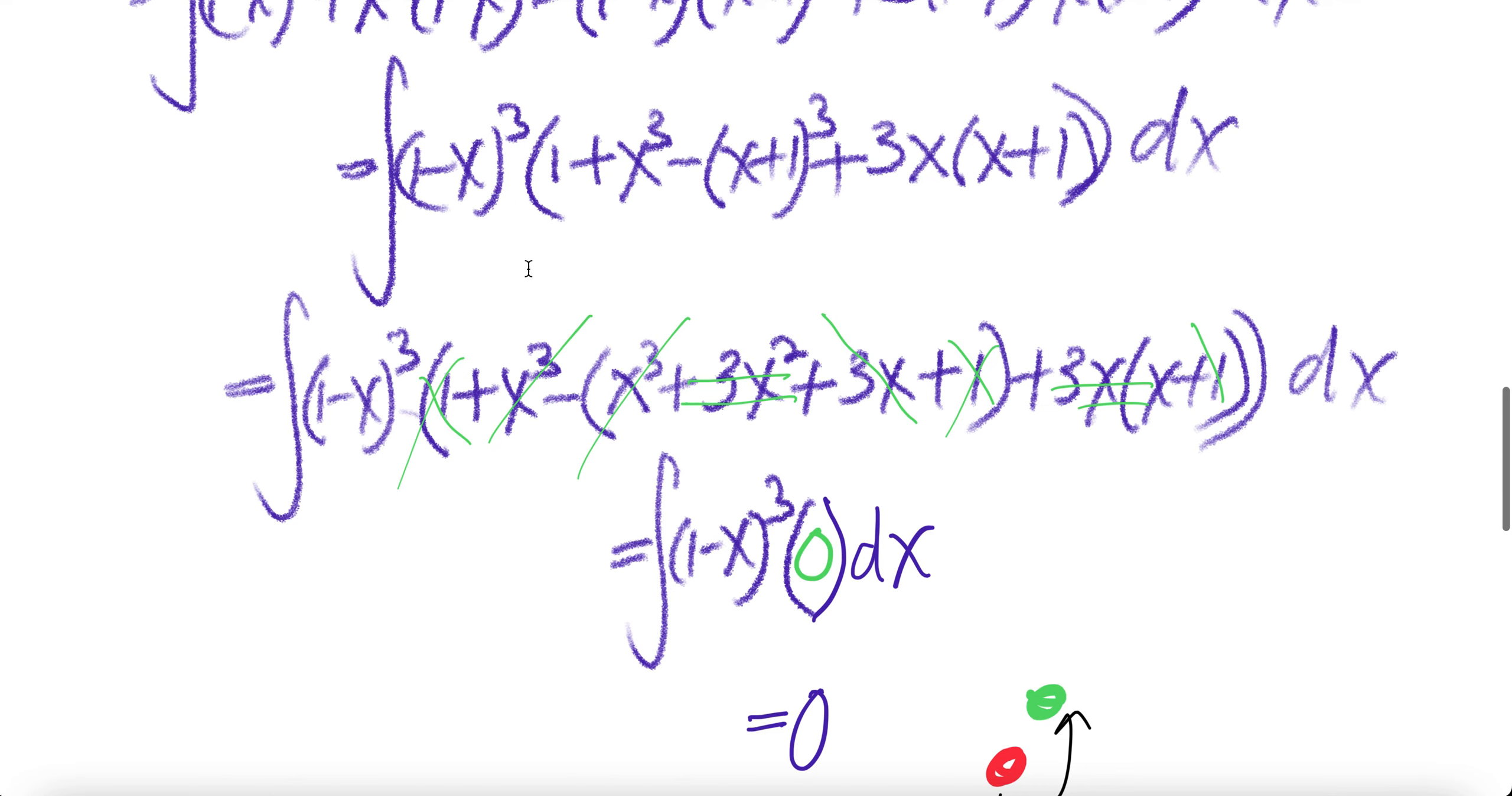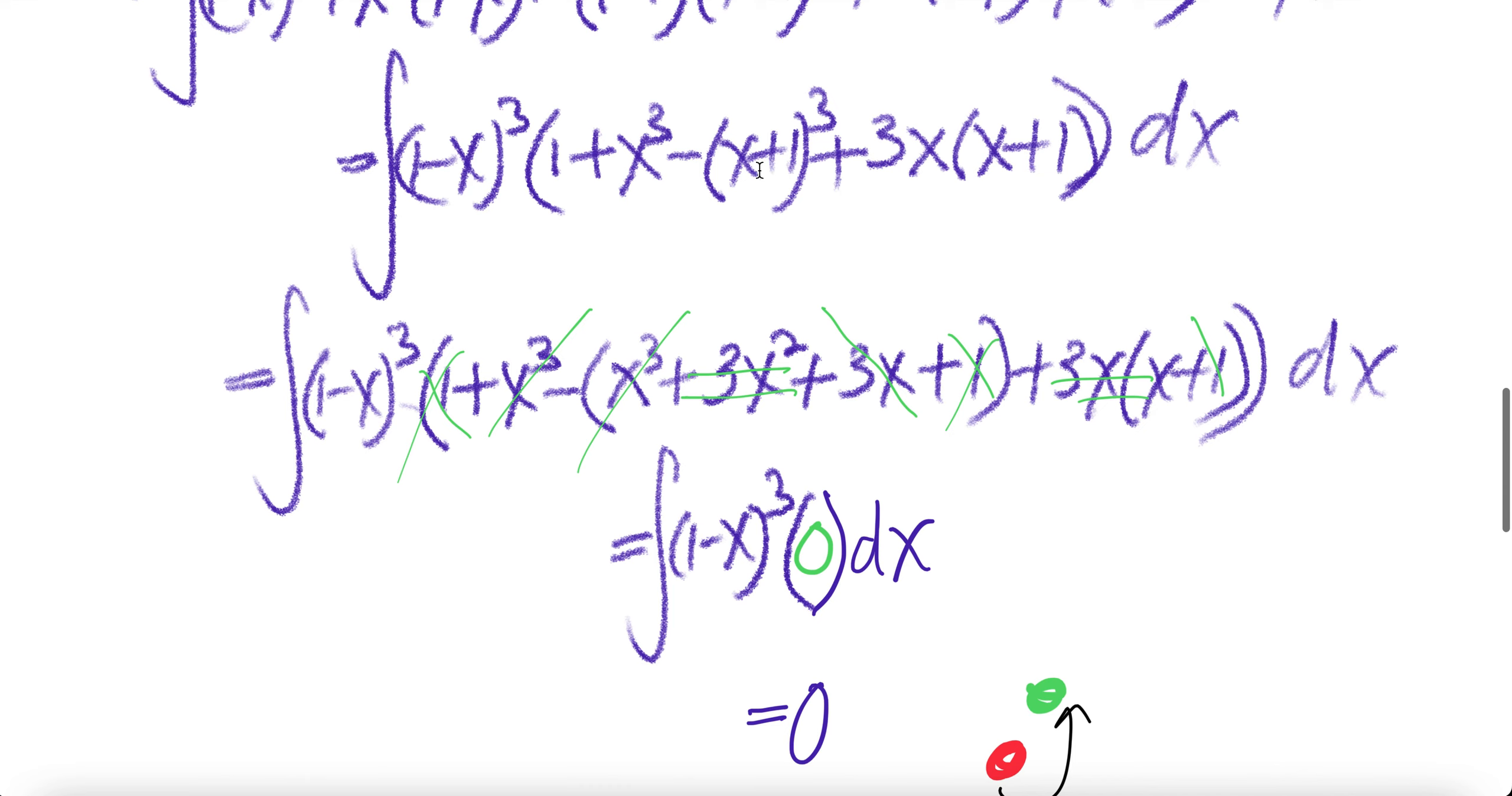Let us expand this out. If you use Pascal's triangle, you'll get 1, 3, 3, 1. And then here will be x³, drop x by 1 it will be x², drop x by 1 you get x, plus x⁰ which is 1. So it will be x³ + 3x² + 3x + 1, and here 3x(x+1).